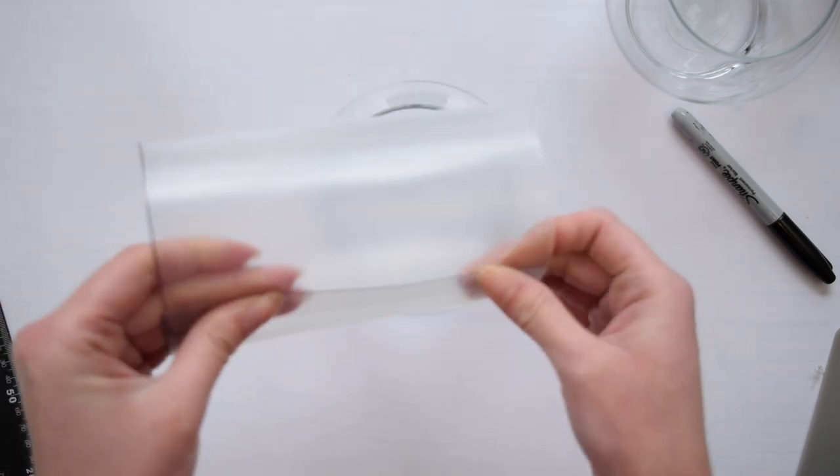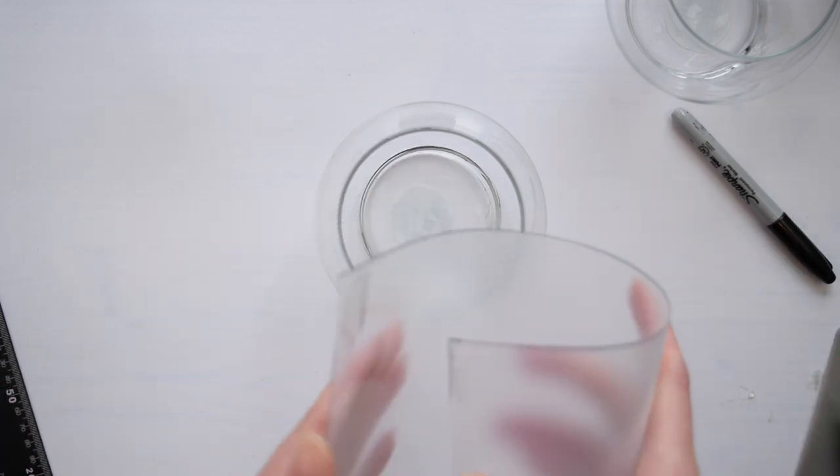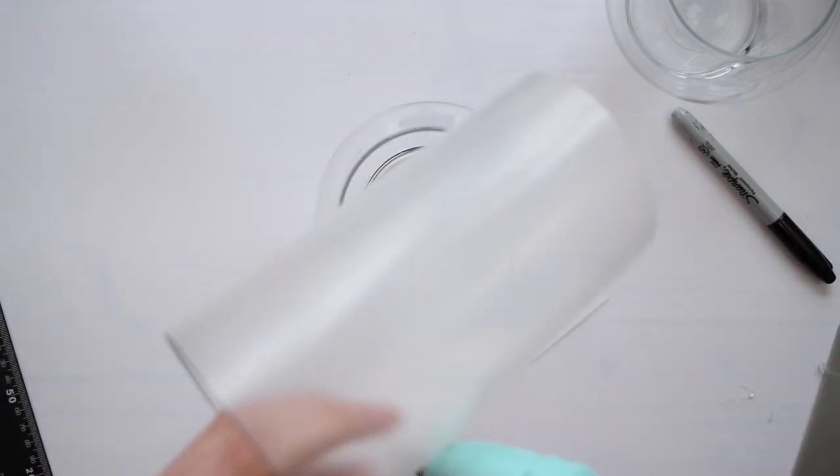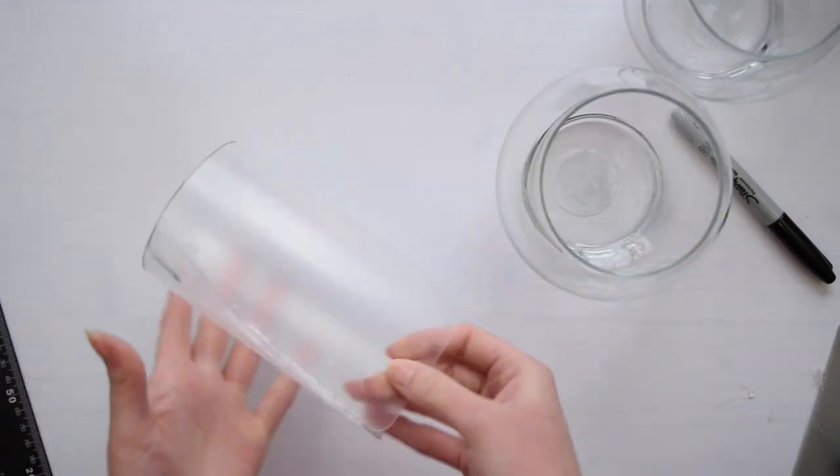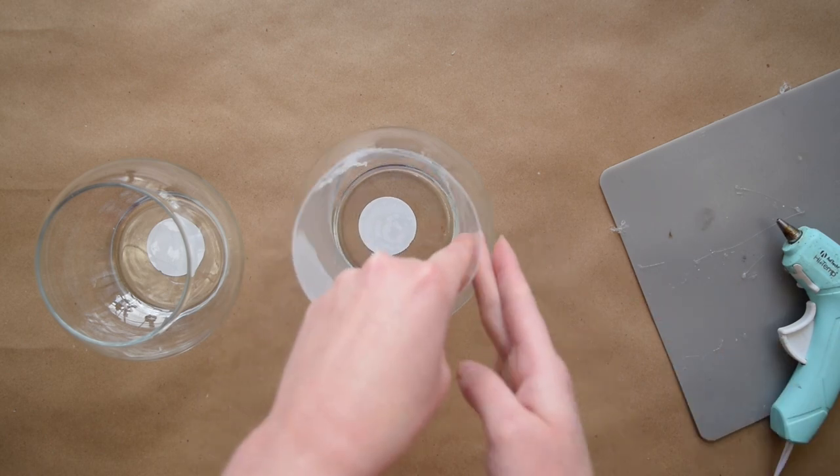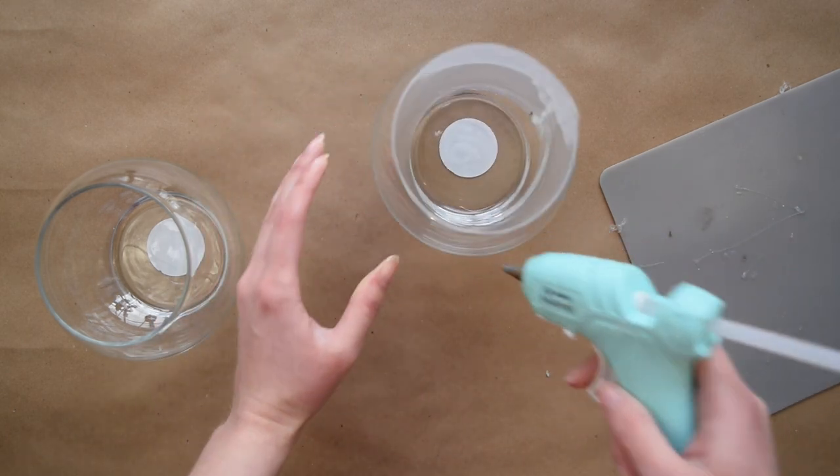I cut out those pieces and also then used some hot glue to secure it into place to make a nice little cylinder. And here is the change in background so you can see what I'm doing. I then glued the cylinder into one of the fishbowls.